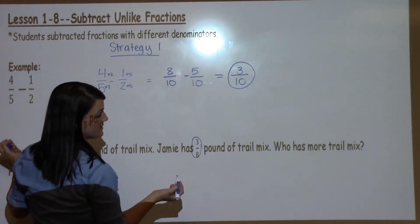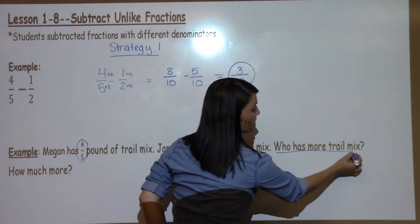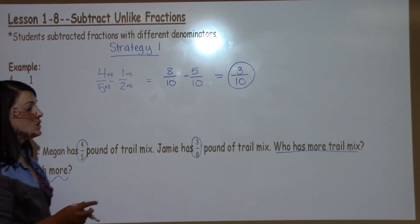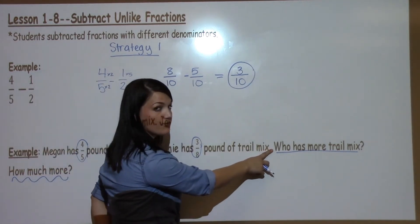My denominators are the same. Example: Megan has some pound of trail mix, Jamie has some pound of trail mix. Who has more trail mix and how much more? So this is actually asking me to do two different things.